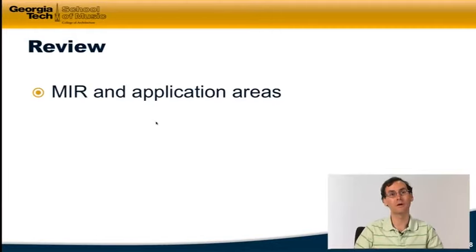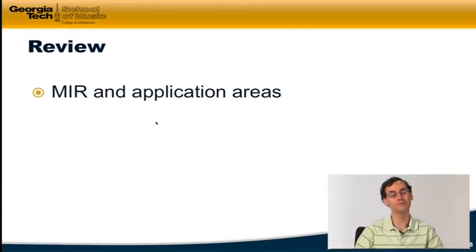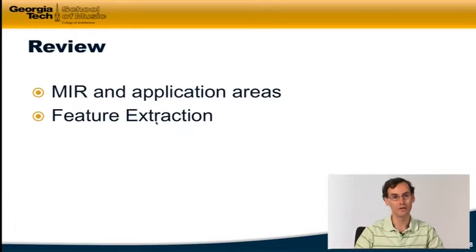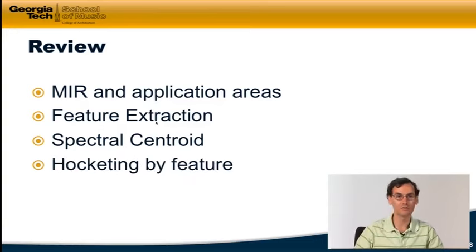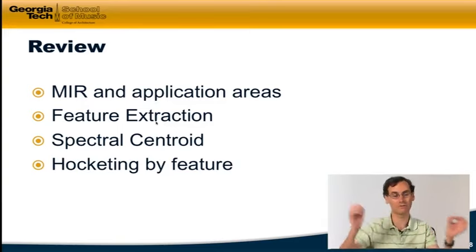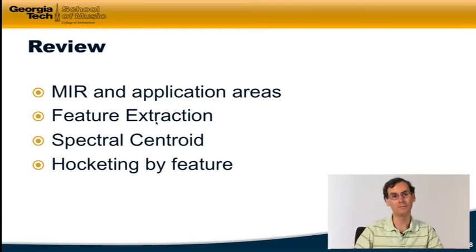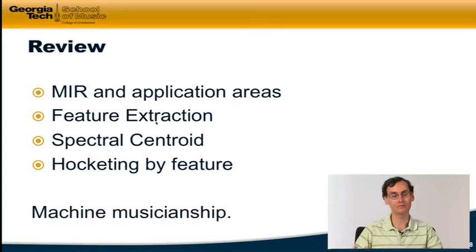So to review what we've covered in this module, we've looked at music information retrieval and some key application areas. We've talked about feature extraction and particularly about spectral centroid as an important base feature. And then we've looked at a creative application of using MIR in the context of EarSketch and Python and Reaper through this kind of hocketing, this going back and forth between two tracks based on the spectral centroid value. In the next video we're going to turn in more detail to one specific application area of MIR, machine musicianship.